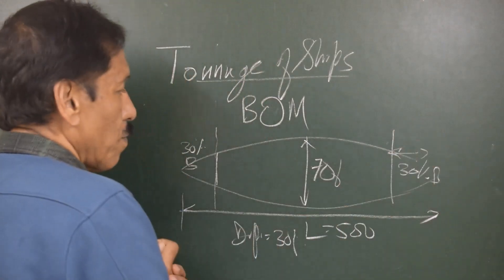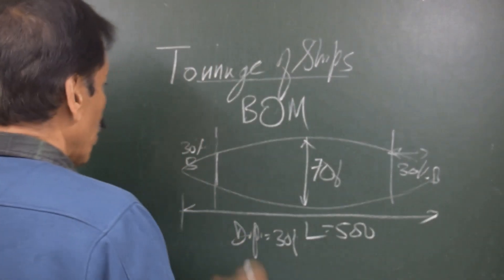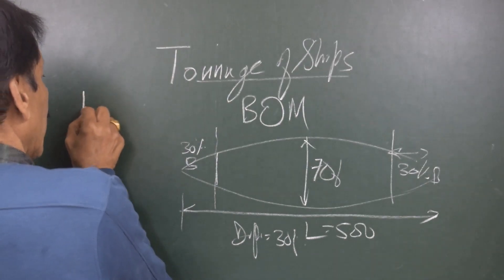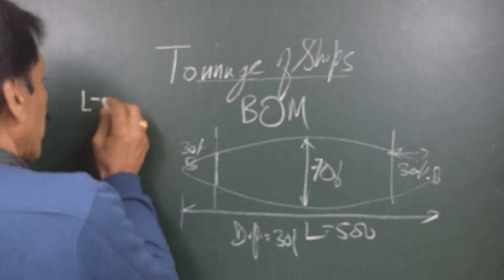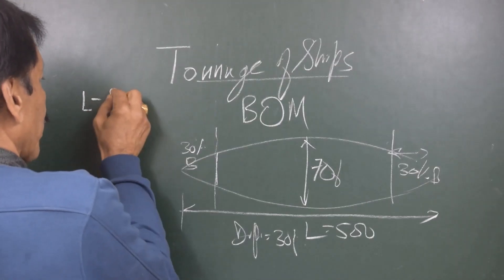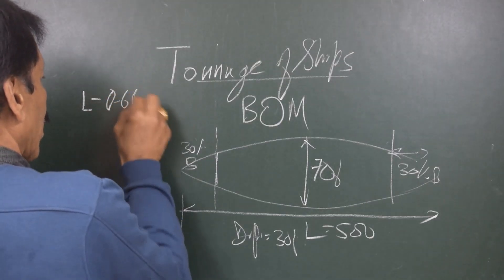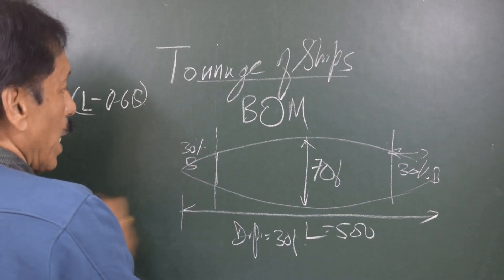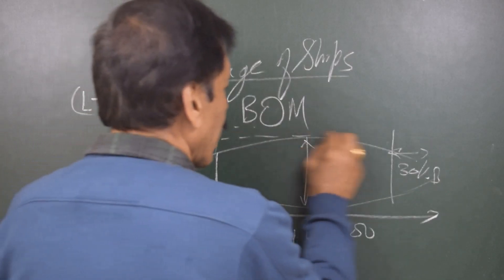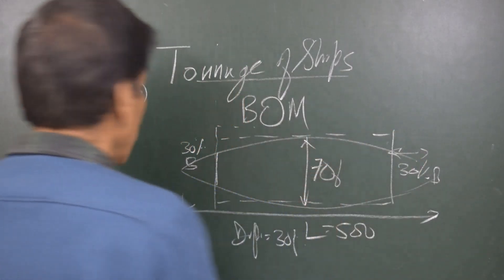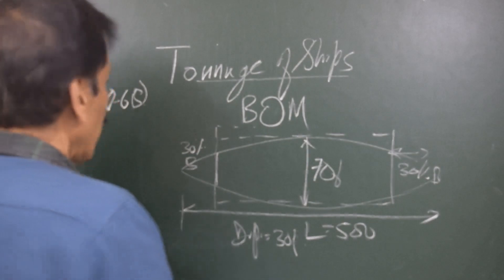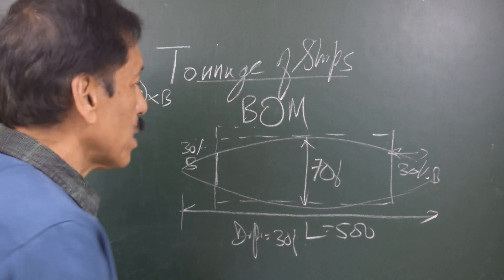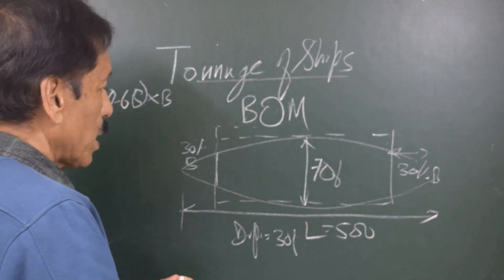The total deduction from the length is 60% of the breadth. So what we say is we consider the effective length to be length minus 60% of the breadth. We assume that there is a rectangle of this length, that is length minus 60% of the breadth. Of course, you multiply this with the breadth, and let us assume that the draft is half of the breadth.